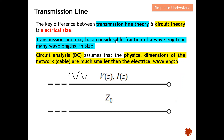A transmission line may be considered a fraction of a wavelength or many wavelengths in size. In short, for a transmission line, the wavelength can be equal to the length of the transmission line, or many wavelengths can equal the length of the transmission line. Let's take a look at the diagram — here you can see the transmission line and the wavelengths marked along it.